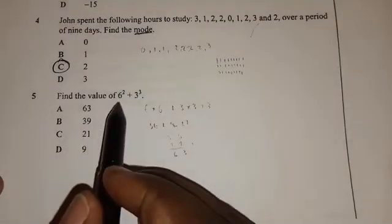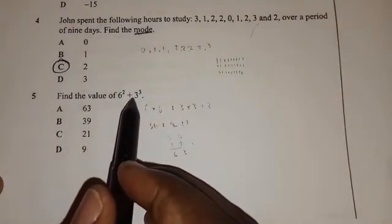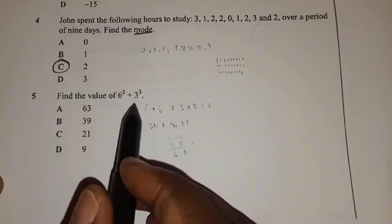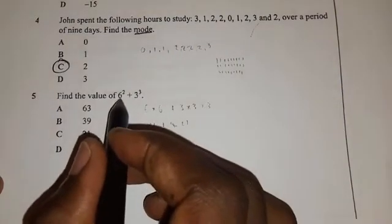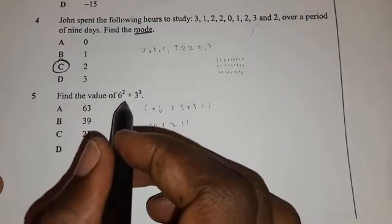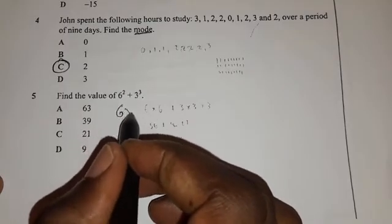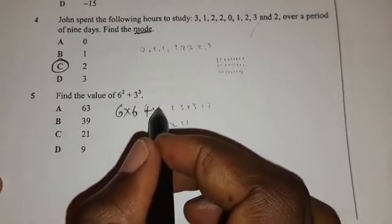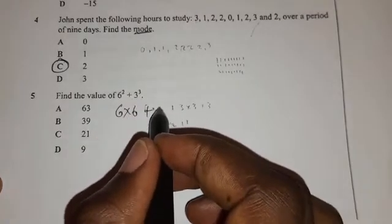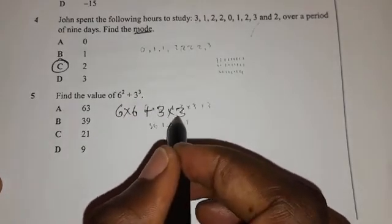Number five. Find the value of six squared plus three cubed. So what you have to know is that six squared does not mean six times two. It means six times six plus three cubed is three times three times three.